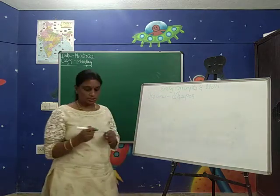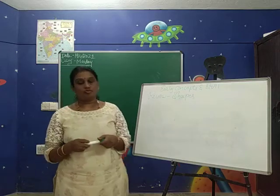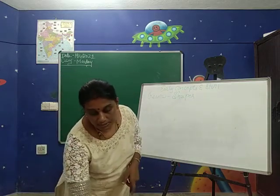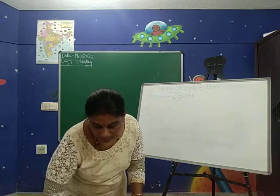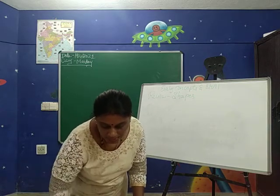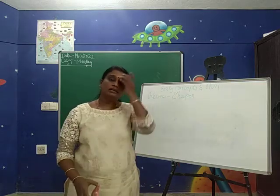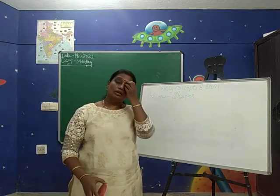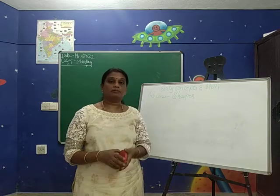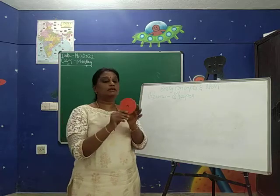I think you all know the shapes now, children. What are the shapes we have learnt so far? Can you tell me, one by one? Circle, triangle, square, rectangle, oval, and diamond shape. Yes, now I will tell you in detail. Please watch it, children.